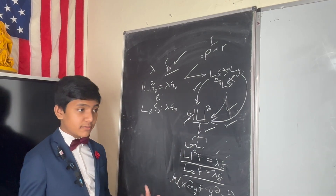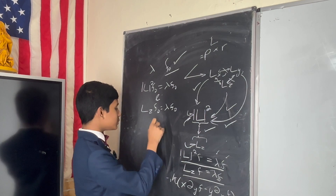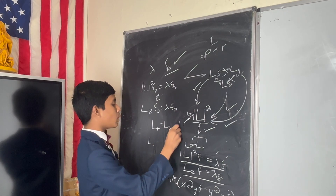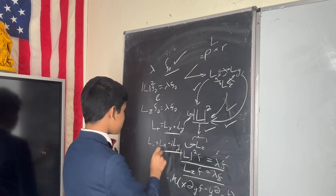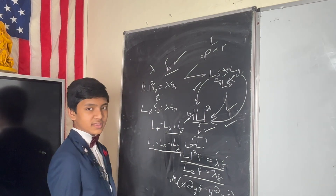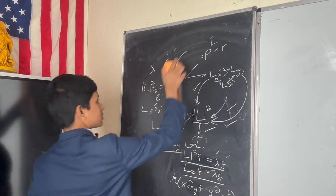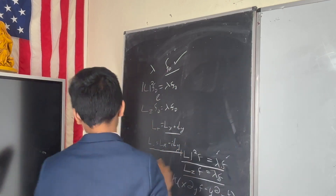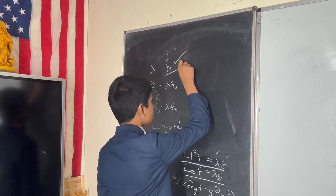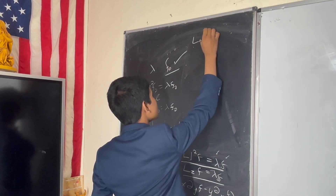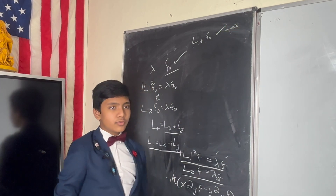Now, can we construct other solutions? Yes, we can. We take the ladder operators, L+ and L−. L+ is just going to be Lx plus i·Ly, and you can guess what L− is going to be. So with these two operators, what happens if we multiply f0 by one of these? I am going to propose that L+ f0 is also a valid solution that corresponds to some eigenvalue for some other valid eigenstate.